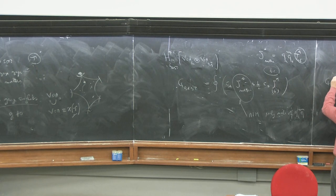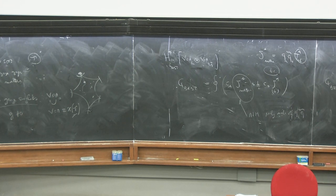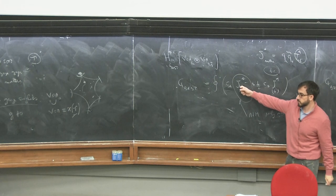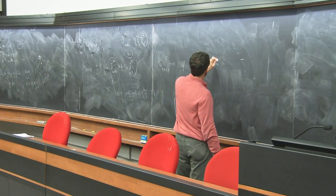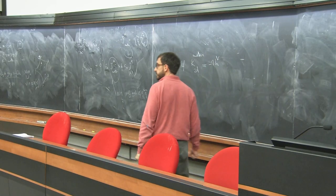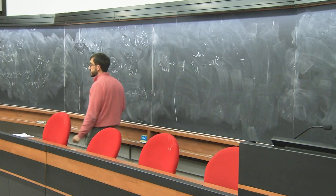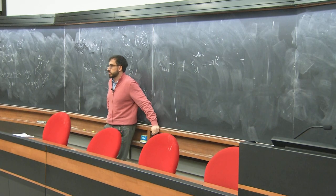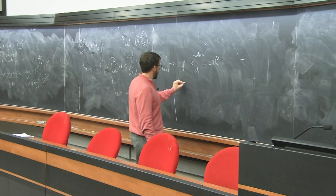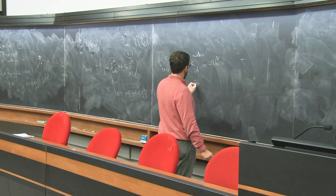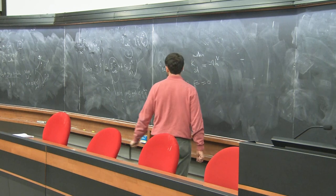It turns out that this object is nilpotent precisely when the level of the Kac-Moody current equals minus two times the dual Coxeter number of G. If you translate this into two-dimensional notation, this is precisely the condition for the vanishing of the four-dimensional beta function.